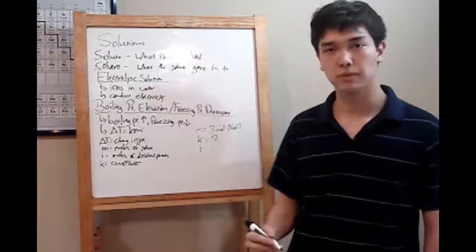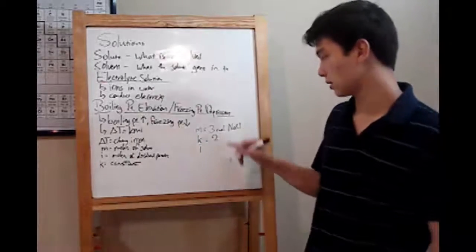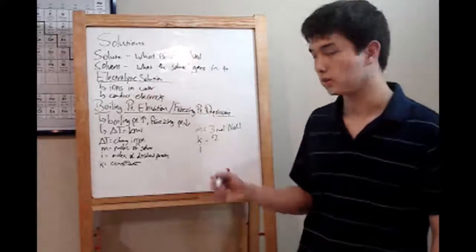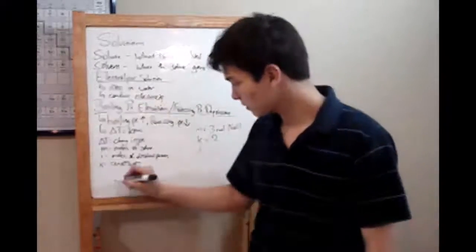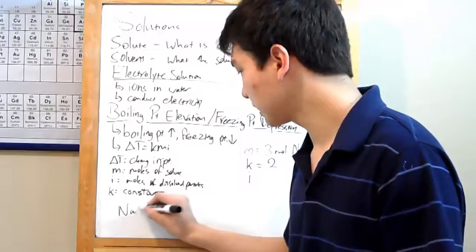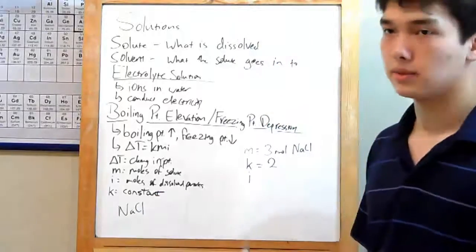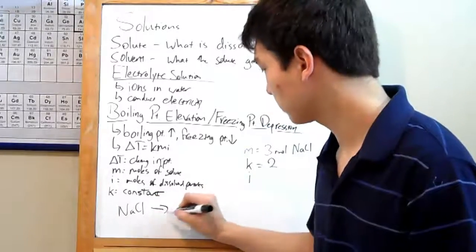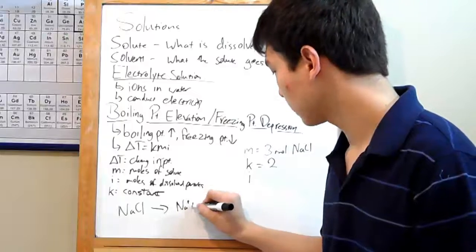And lastly, I. I is your moles of dissolved particles. Well, you might just think, 3 moles of sodium chloride, 3 moles. Well, not exactly. Sodium chloride, NaCl, is ionic. When you dissolve it in water, it'll split up into ions, Na plus and Cl minus.